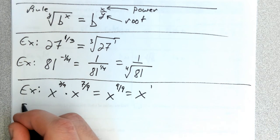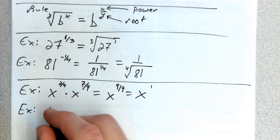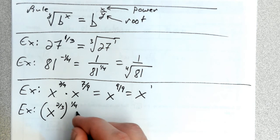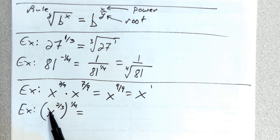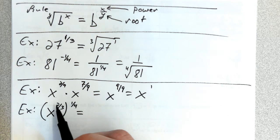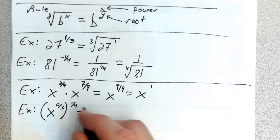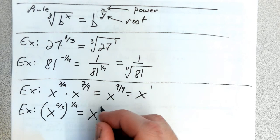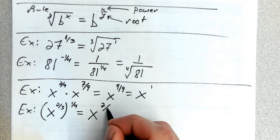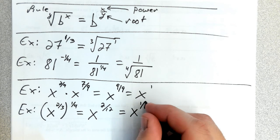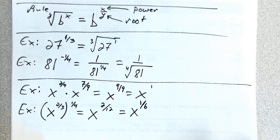All the other exponent properties apply as well. If you had x^(2/3) raised to the 1/4, with power to a power you multiply the exponents. Multiply these fractions: straight across top and bottom. You get x^(2/12), which equals x^(1/6). That's how this works.